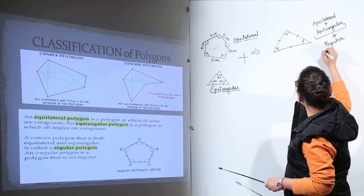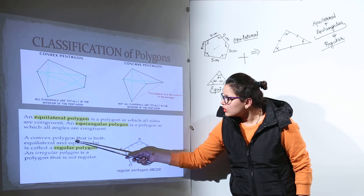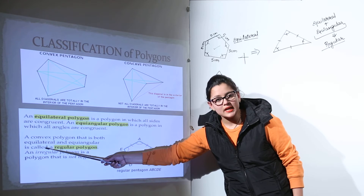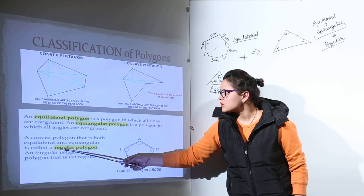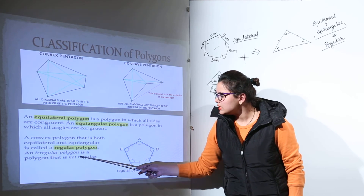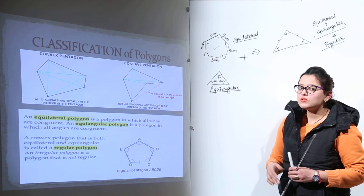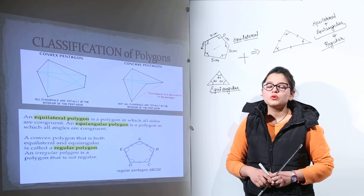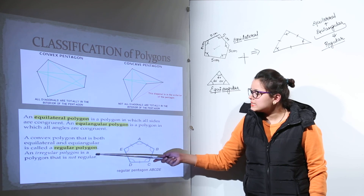A convex polygon that is both equilateral — meaning it has all sides equal — and equiangular — meaning it has all angles equal — is called a regular polygon. An irregular polygon is one that is not regular, meaning it might have all the sides equal but all the angles are not equal, or all the angles are equal but all the sides might not be equal. Such polygons will be known as the irregular ones.